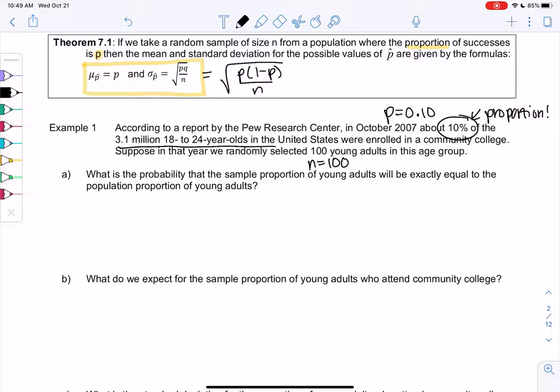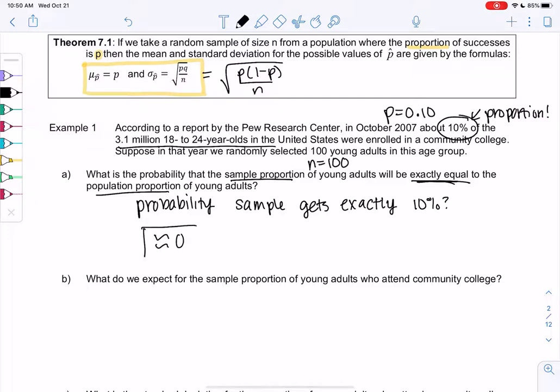Part a: What is the probability that the sample proportion of young adults will be exactly equal to the population proportion of young adults? It's basically asking us what's the probability our sample gets exactly 10 percent. And we learned earlier exactly 10 percent is highly unlikely, so we're going to say approximately 0. The idea is it's not going to be exact, but it should be close.